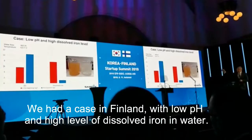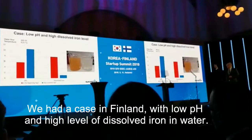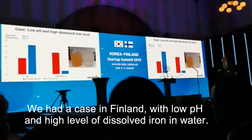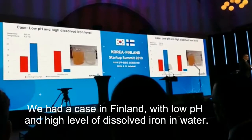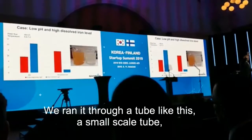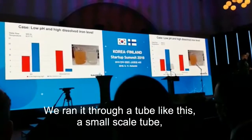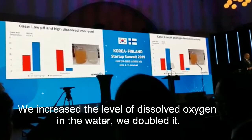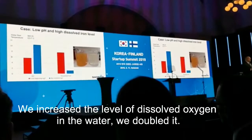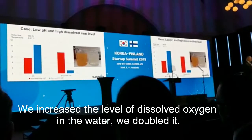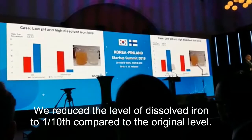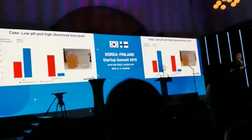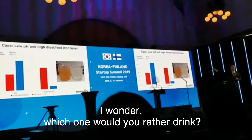We have a case in Finland with groundwater that had low pH and high dissolved iron. We ran it through a small-scale tube like this, increased the dissolved oxygen in the water — we doubled it — and we reduced the dissolved iron to one-tenth of the original. So I just wonder: which water would you rather drink?